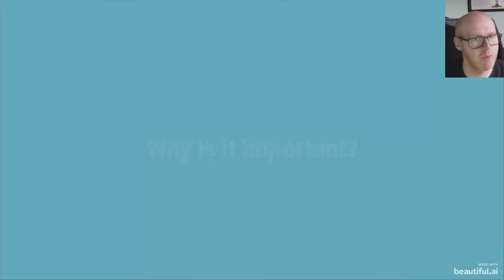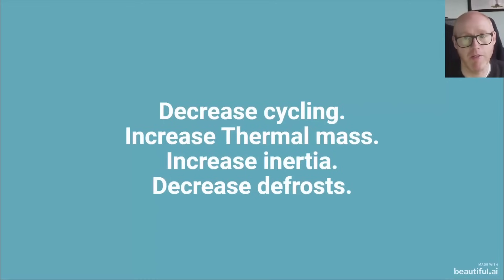So why do we need to think about system volume? You can decrease the cycling because you're increasing the thermal mass, so you're smoothing out those dips and troughs and ons and offs. You're increasing the thermal inertia and you decrease the defrosts, or potentially you can help with the defrost cycle through having sufficient volume.